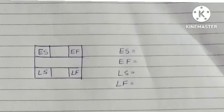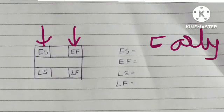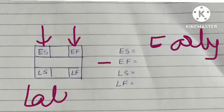All these terms are related to project management. ES and EF denote early start and early finish. LS is for late start.